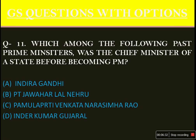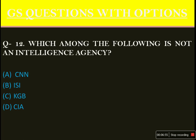Which among the following past Prime Ministers was also the Chief Minister of a state before becoming PM? They are not talking about Narendra Modi — past Prime Ministers. The answer is option C: Pamulapati Venkata Narasimha Rao, commonly known as P.V. Narasimha Rao. Which among the following is not an intelligence agency? ISI is of Pakistan, KGB is of Russia, CIA is of the US. That leaves CNN — Cable News Network — it's a news agency, not an intelligence agency. Option A.